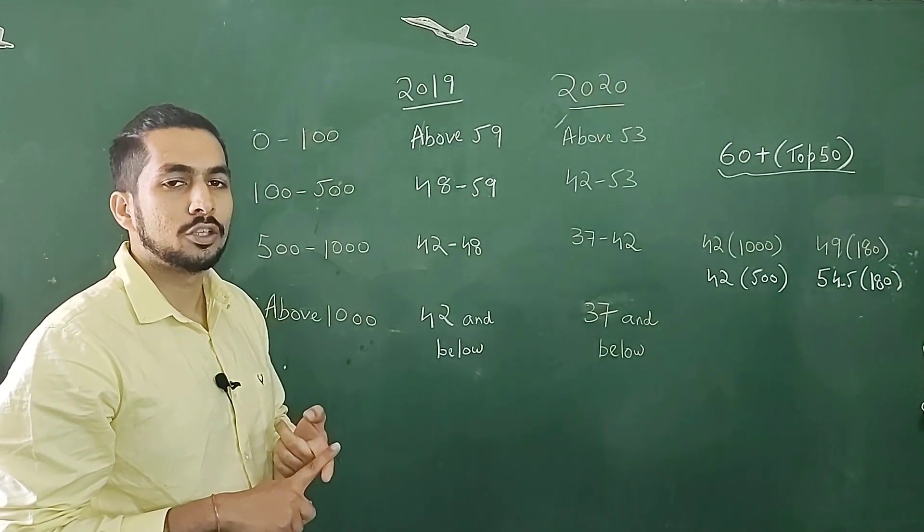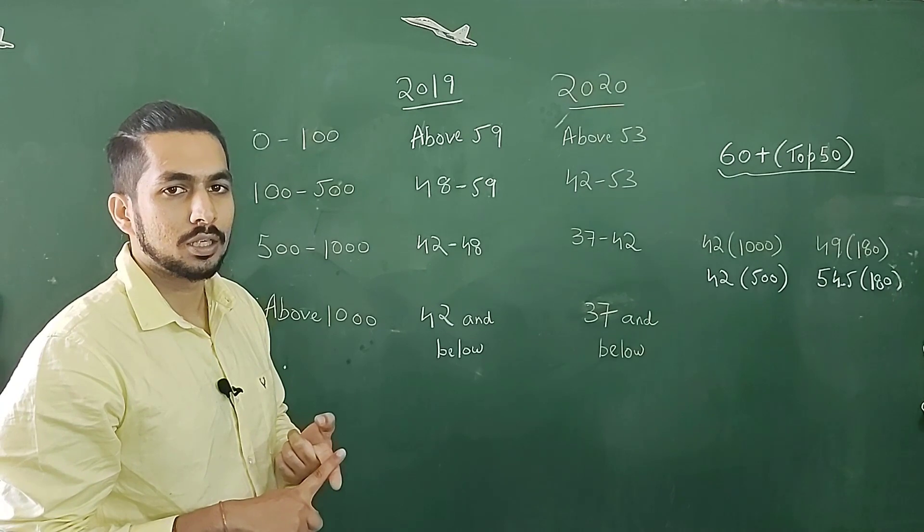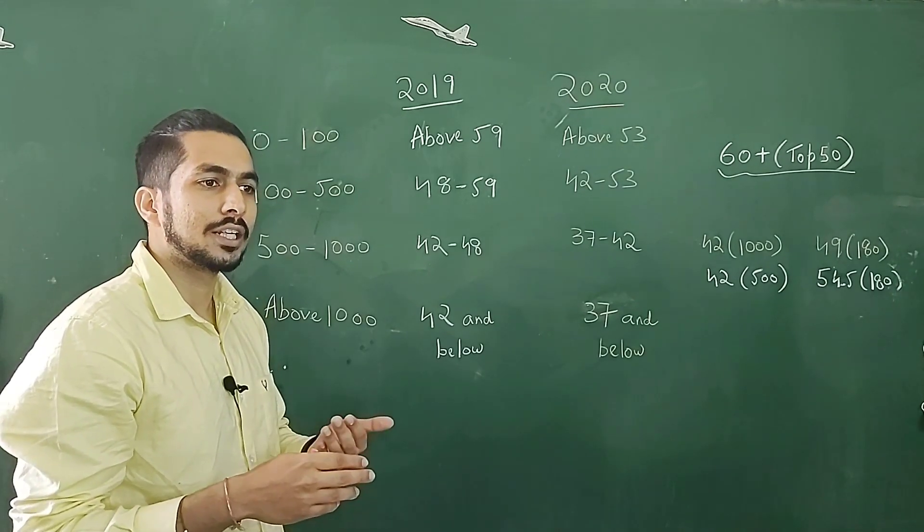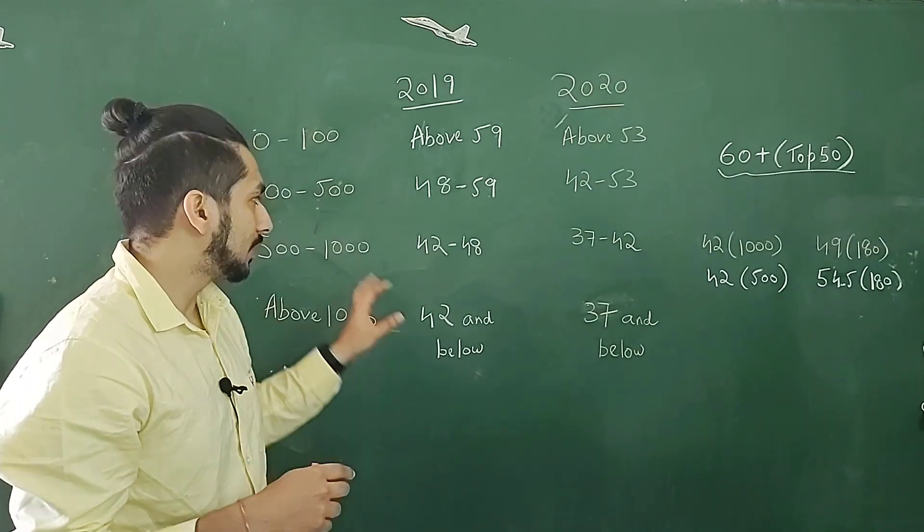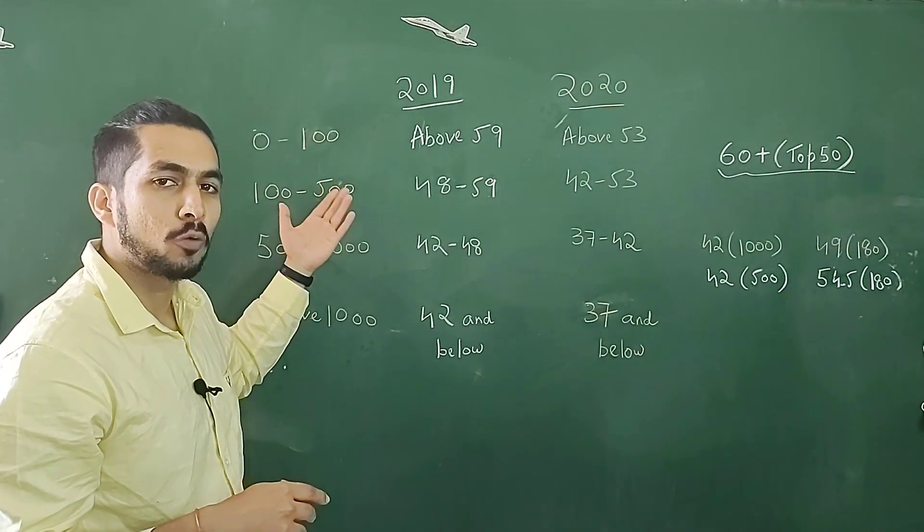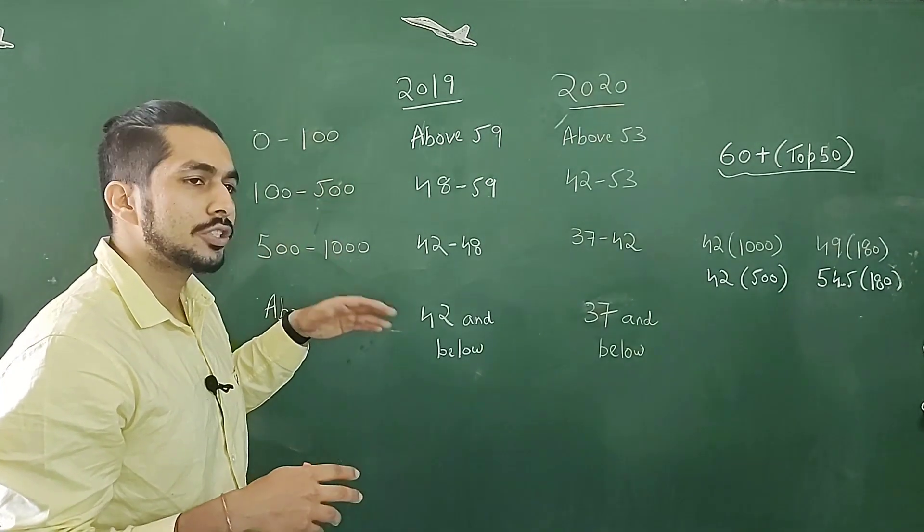Generally, top IITs prefer a rank around 400, like 1 to 400. So that is where you basically, in 100 to 500, you qualify for top IITs. In 500 to 1000, generally you qualify for the newer IITs.